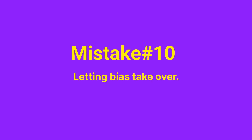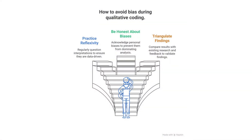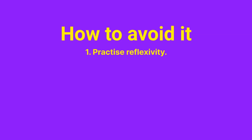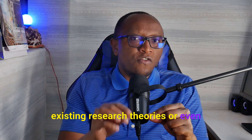Mistake number ten: letting bias take over. Coding with bias or preconceptions means walking into the data already knowing what you want to find, bending codes to fit your expectations. That's not analysis — that's confirmation bias, and it ruins your credibility. To avoid it, practice reflexivity by regularly asking yourself whether you are interpreting based on the data or your own lens. Be honest about your background and biases by writing a reflexivity section in your methodology. Also triangulate — compare your findings with existing research, theories, or peer and participant feedback. Let the data speak, not just your inner voice.